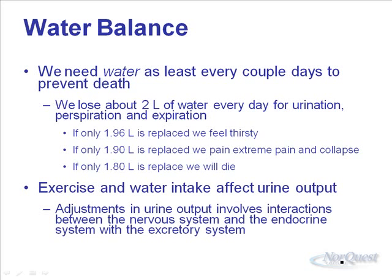Things like exercise and water intake are going to affect our urine output. Water intake isn't just water from the tap — everything we eat contains water, so we take in some water every time we eat. Fruits and vegetables are high in water, for example. If we don't replace those 2 liters, we'll have to adjust our urine output, which involves both our nervous system and endocrine system interacting with the excretory system.